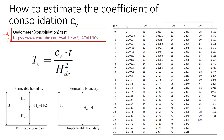We need to know this equation. In this equation we have the time factor, the coefficient of consolidation, and a parameter called Hdr, which relates to drainage.